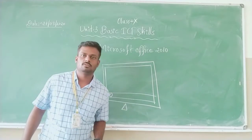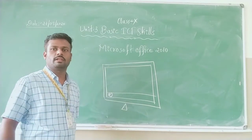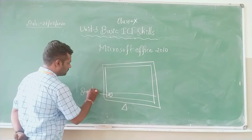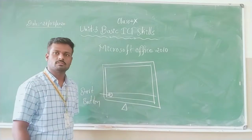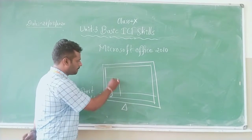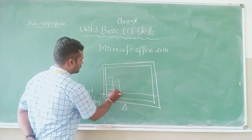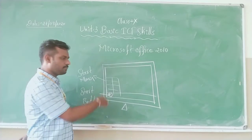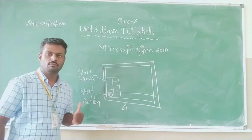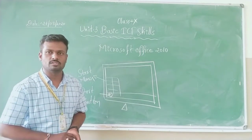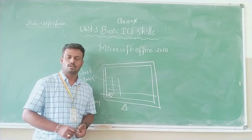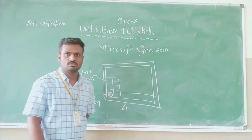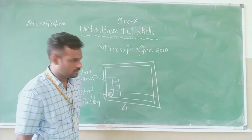To open Microsoft Office, after installation you need to click on the Start button. When you click the Start button you will get the Start menu. In the Start menu you can go to All Programs, and you'll get a list of programs installed on your computer. From that list, click on Microsoft Office and you will get a list of applications including Microsoft Word. Click on Microsoft Word to open it.